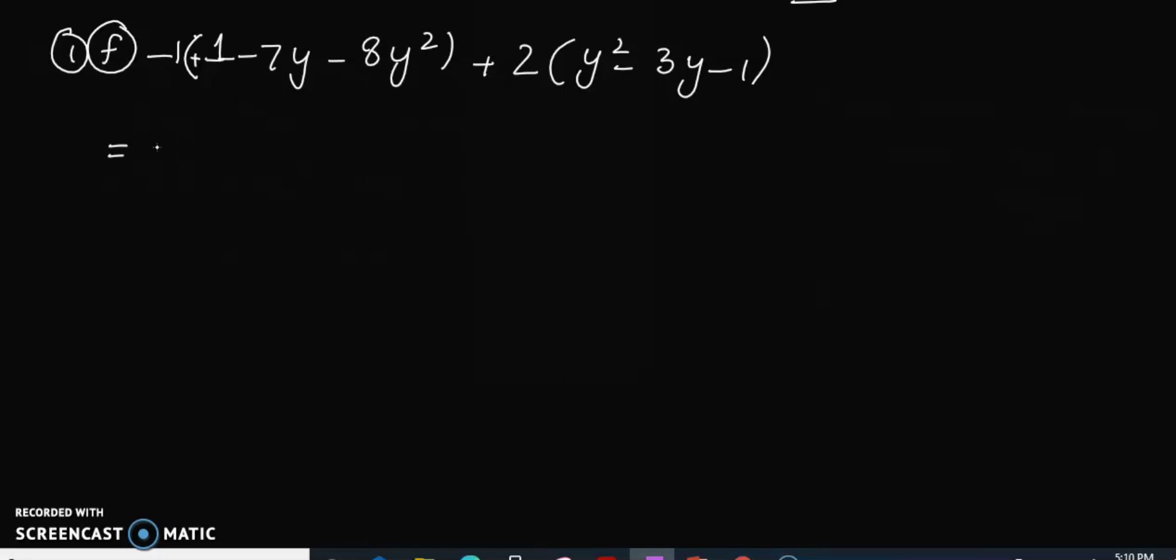So here we have positive 1 plus minus minus 1 times 1 is 1. Minus minus is plus and we get 1 into 7 is 7. Minus minus minus plus, so we have 8y square. Now here we have 2y square plus minus minus and 2 times 3 is 6. Now plus minus is minus and 2 times 1 is 2. Now again, you have to combine the like terms and then you have to solve.